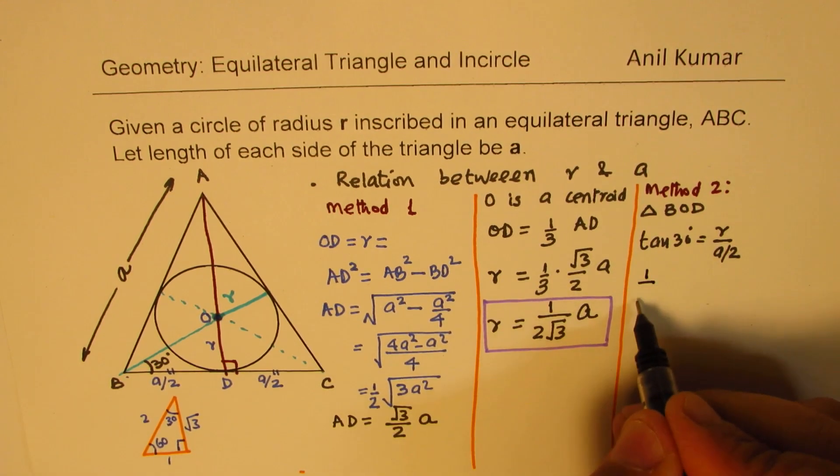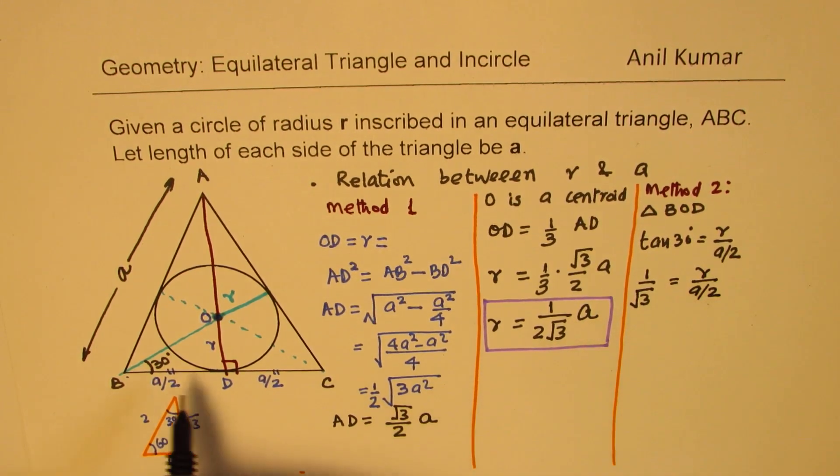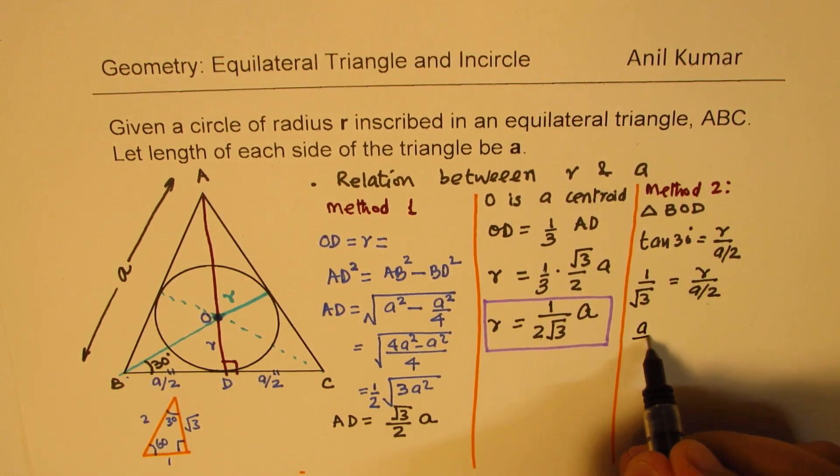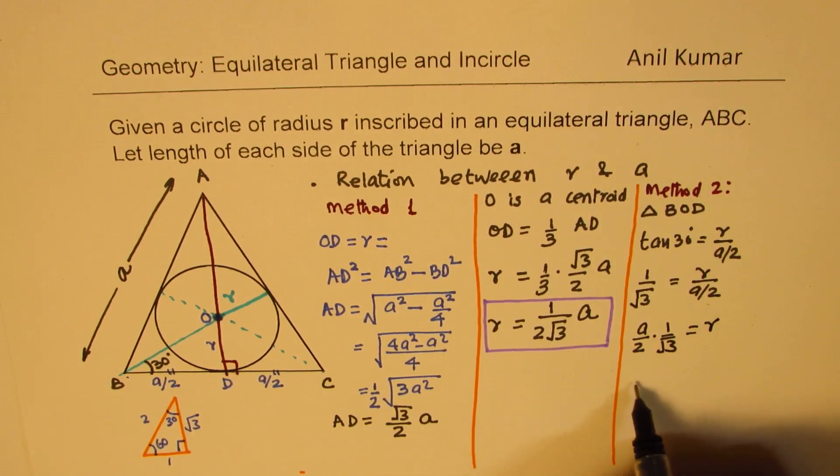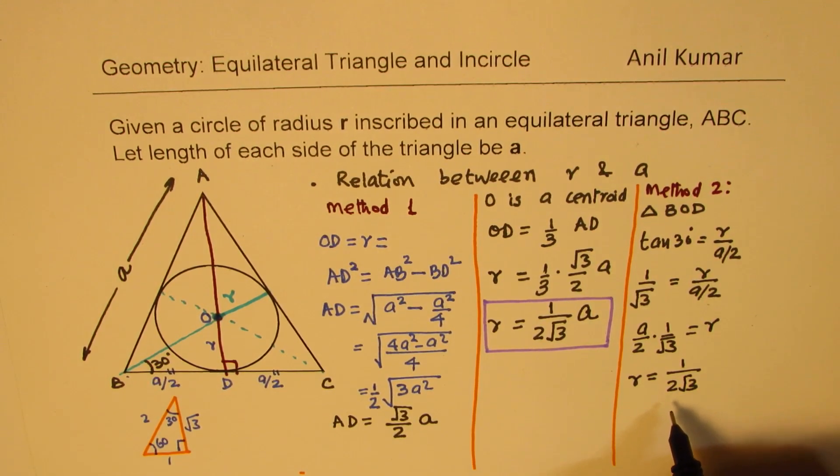So this is 1 over square root 3 is equal to r over a by 2. Half of a. Cross multiply. So you get a by 2 times 1 over square root 3 as equal to r. And we get the same formula. r is equal to 1 over 2 square root 3 times a.